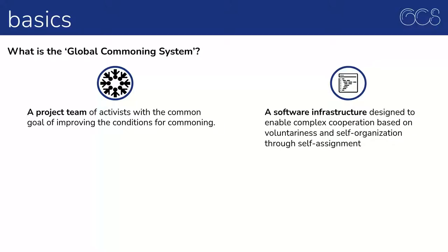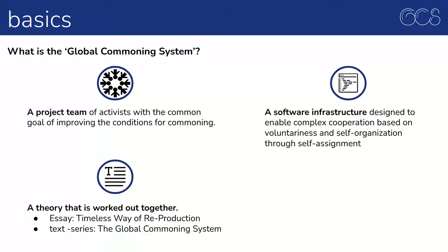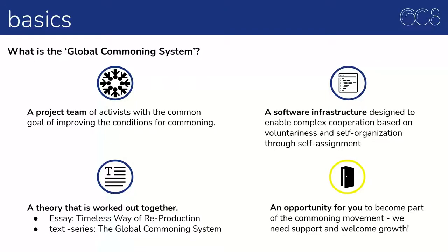Furthermore, the global commoning system is a theory that is worked out together. So far, the essay "Timeless Way of Reproduction" and the text series "The Global Commoning System" have been published, but in German only. The text series is still incomplete. And the global commoning system is a way for you to become part of this movement — we need support and welcome growth.